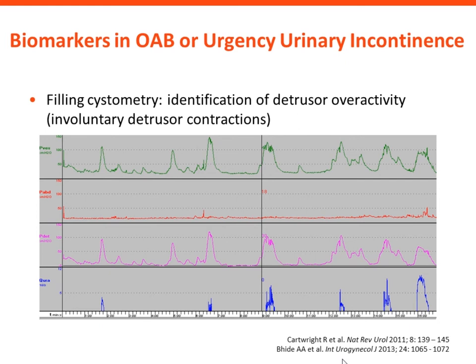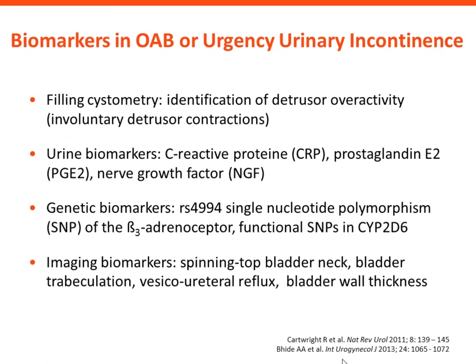So what are the biomarkers we can use for OAB or urgency urinary incontinence? Number one, filling cystometry — we can detect detrusor overactivity, visible as involuntary detrusor contractions, a biomarker of OAB especially when associated with urinary incontinence in the flow channel. Another category is urinary biomarkers such as C-reactive protein, prostaglandin E2, or nerve growth factor. We also have genetic biomarkers associated with urgency incontinence: RS4994, single nucleotide polymorphism of the beta-3 receptor, or functional SNPs of cytochrome P450 in the liver called CYP2D6.